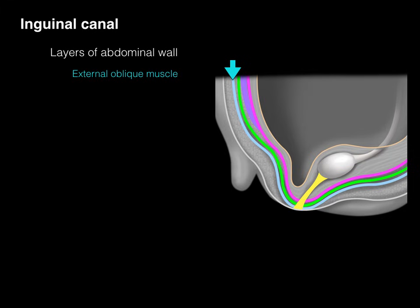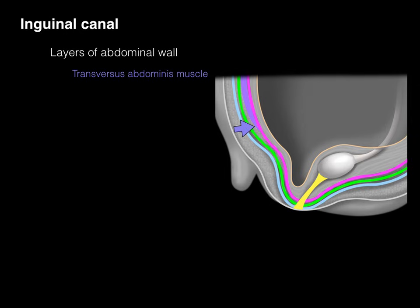The next layer is the external oblique muscle and associated aponeurosis. Next is the internal oblique muscle with associated aponeurosis, and then the transversus abdominis muscle. As it extends down to the perineum area, the muscle ends and the aponeurosis fuses with the transversalis fascia, shown in pink.